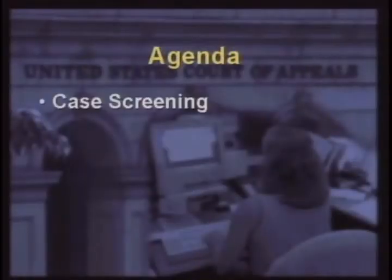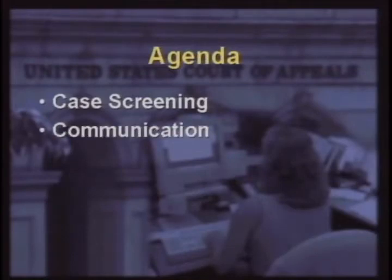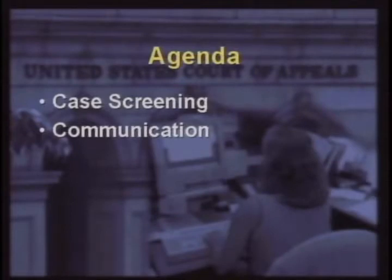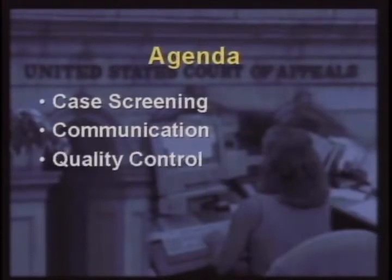And now on to today's agenda. In our first panel, we'll be talking about case screening-related challenges, and that includes the role of case managers in that part of the process. Next, we'll cover the issue of communication — that's how we communicate with the district or bankruptcy courts. How do you keep attorneys, as well as other court staff, aware of changes in the FRAP rules, local rules and IOPs, and where do you go for additional information or clarifying information? Our third panel and discussion will focus on the important issue of quality control. With all the information required in case opening, what are the challenges and are there measures your circuit has taken to ensure accuracy?